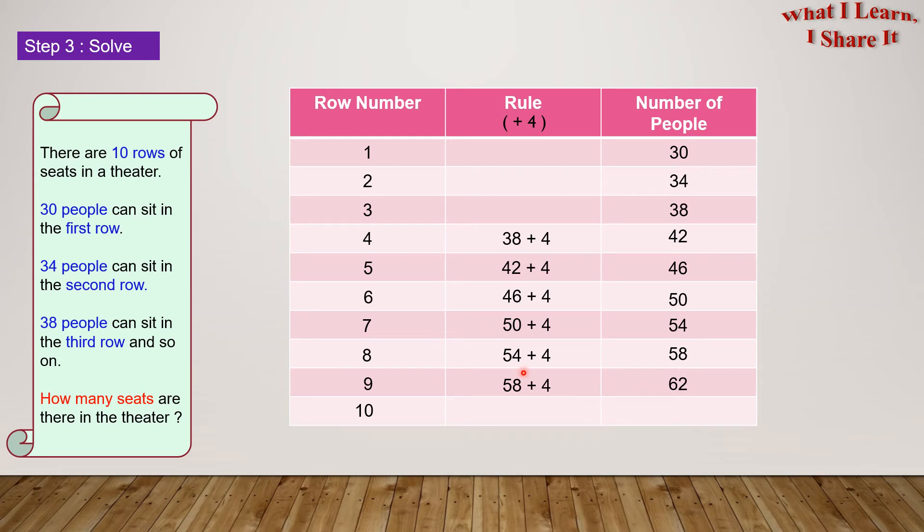And for row number 10, it will be 62 plus 4, which is 66. Now we got the number of people that can sit in rows 1 through 10. In order to find all the seats in the theater, we must add all these numbers. So let's do it.